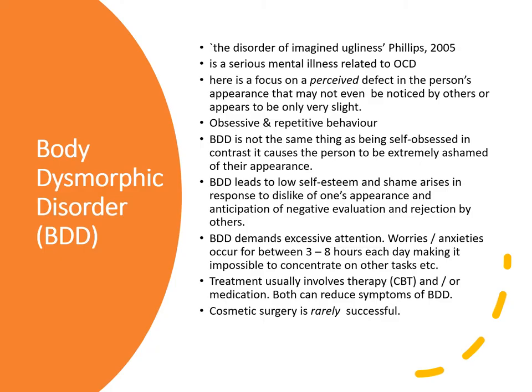Body dysmorphic disorder is essentially the extreme end of this continuum of not liking the way that we look. Phillips called it 'the disorder of imagined ugliness' — it's a serious mental illness related to OCD. The focus is on a perceived deficit or defect in the person's appearance. What that individual sees in the mirror is not what we see at all. This leads to really obsessive, repetitive behaviours. It's not the same as being self-obsessed — it causes that person to feel really ashamed, and shame is the key distinct element.